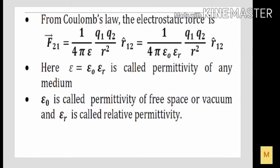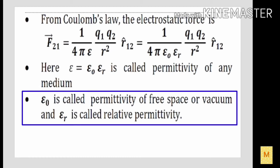Here, ε = ε₀ × εᵣ, which is called the permittivity of any medium. Which means that if the charge is placed in any medium other than air, then ε will be considered as ε₀ × εᵣ, where ε₀ is said to be the permittivity of free space and εᵣ is called the relative permittivity. Relative permittivity is the component which helps to relate the permittivity of any medium and the permittivity of free space.